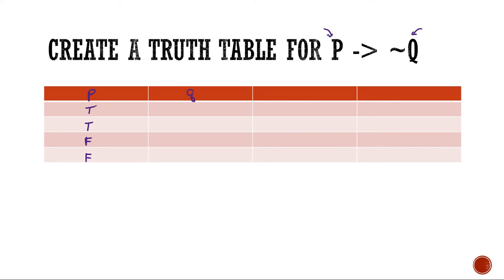Likewise, for the Q column, what I'm always going to do is alternate between true and false: T, F, T, F. This is what I'm going to use every time I work a problem — this is my starting point. So the P column will have true, true, false, false, and the Q column will have true, false, true, false.